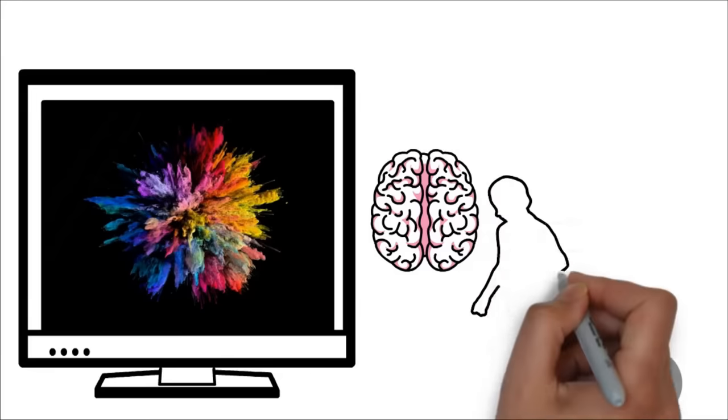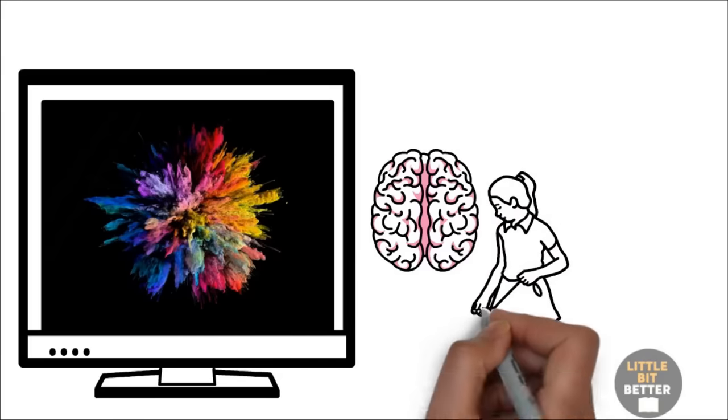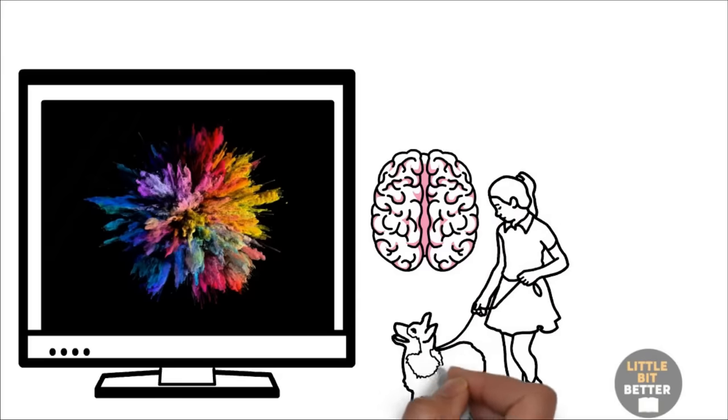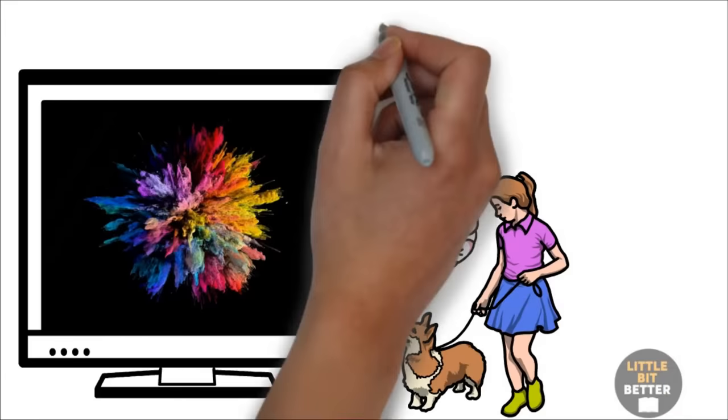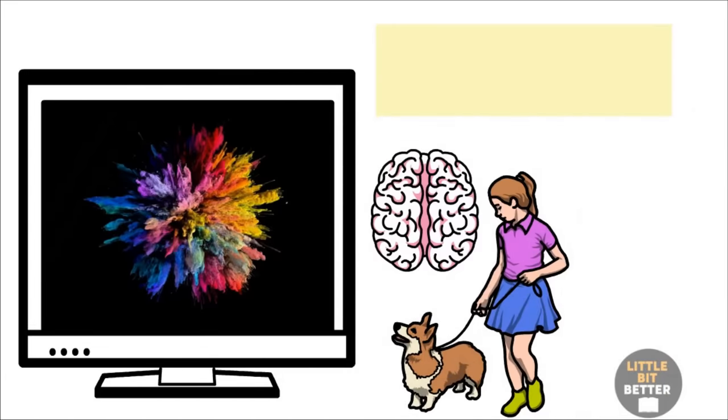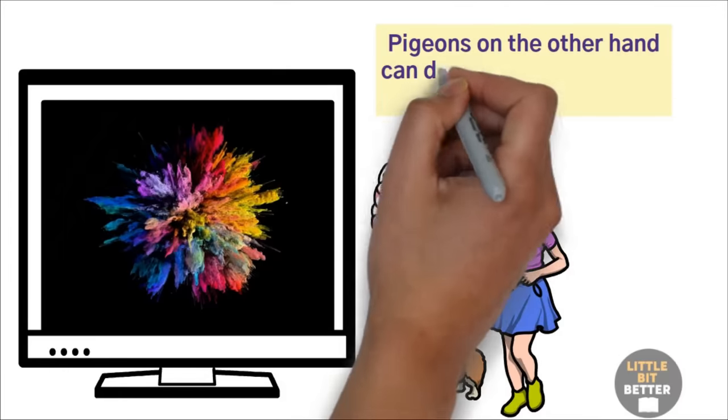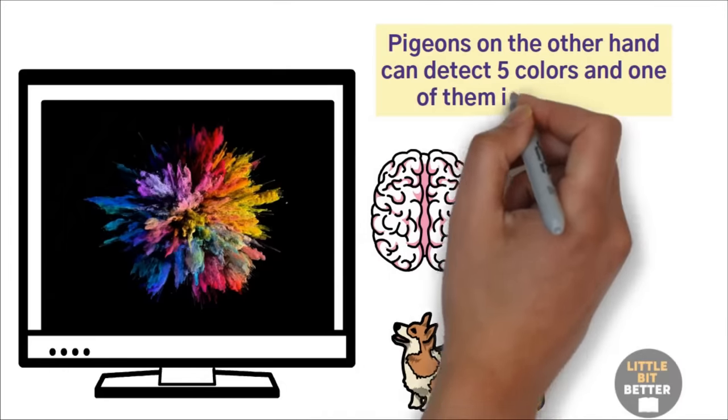The screen is designed for humans. In other words, your dog thinks that your TV is awful because dogs can only detect two colors, whereas humans can detect three colors. Pigeons, on the other hand, can detect five colors, and one of them is ultraviolet.